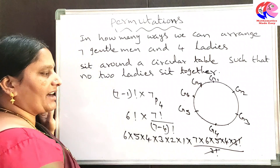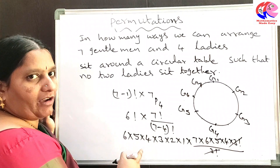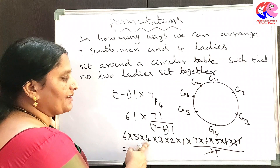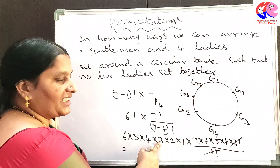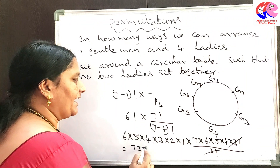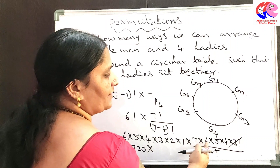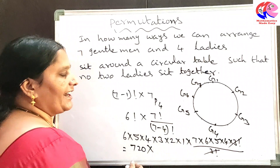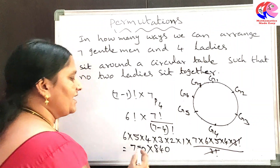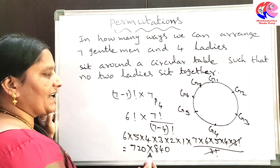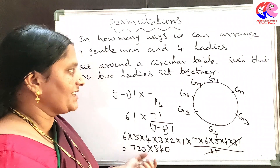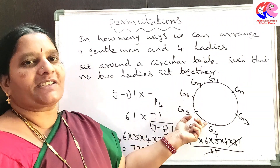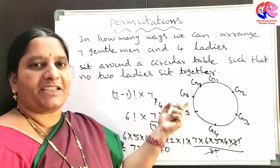We can cancel 3 factorial in the numerator and denominator. Multiplying all the numbers gives us 6! × 840, which is the total number of ways of arranging 7 gentlemen and 4 ladies around a circular table such that no 2 ladies sit together.